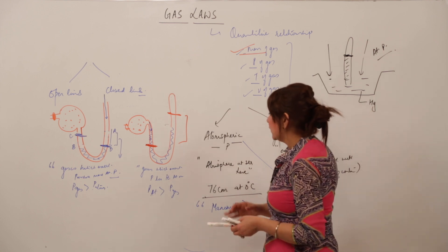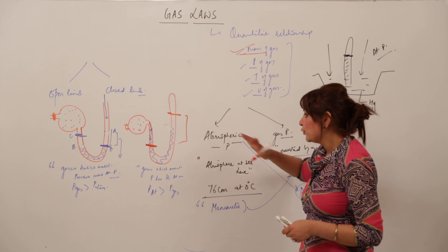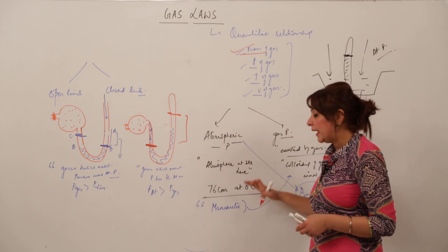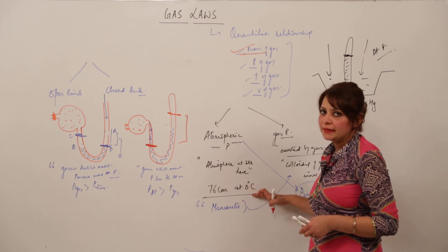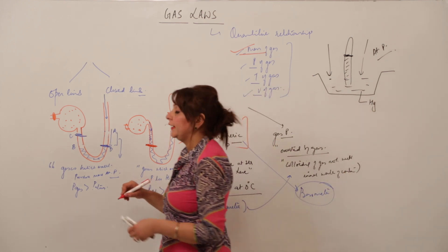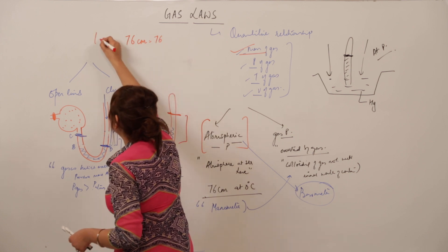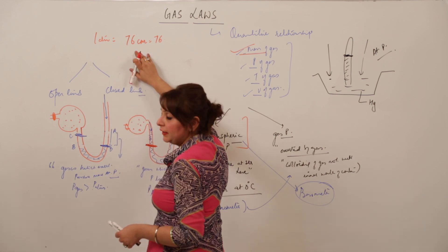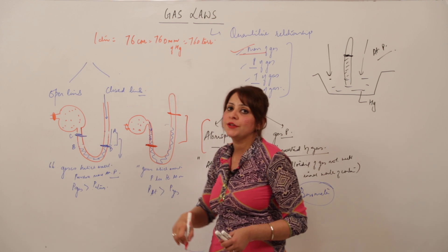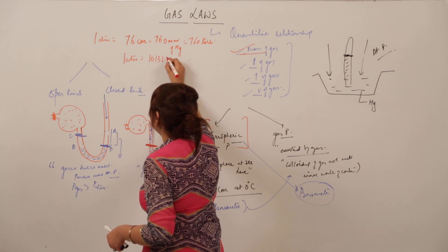You should also be familiar with the units used for atmospheric pressure. Atmospheric pressure is the pressure exerted by atmospheric gases at sea level, calculated to be 76 cm of mercury at 0°C. The SI unit is one atmosphere, which equals 76 cm of mercury, or 760 mm of mercury, or 760 torr.